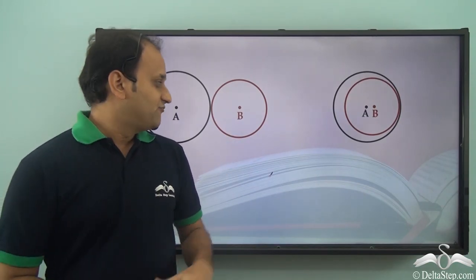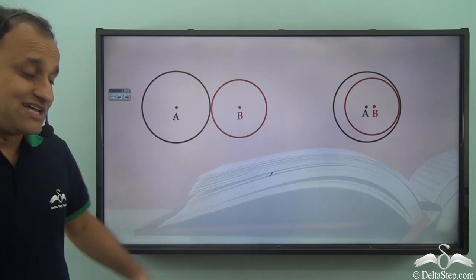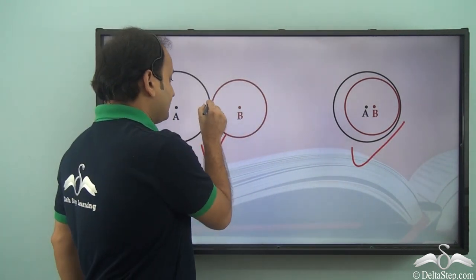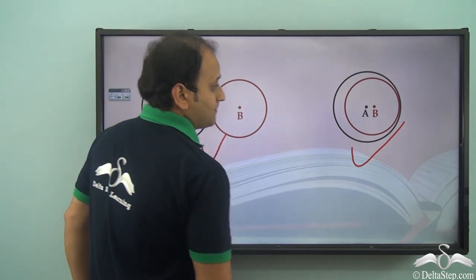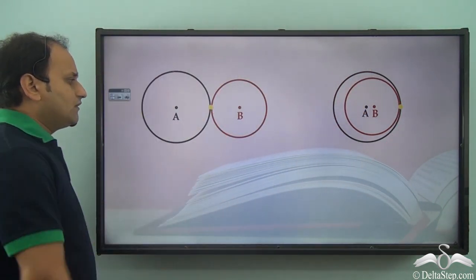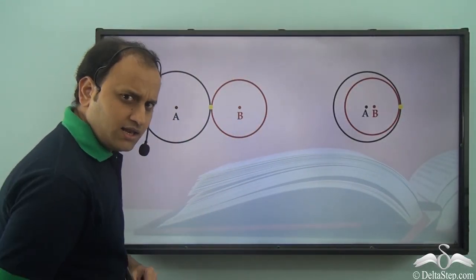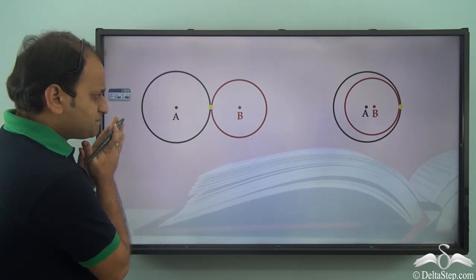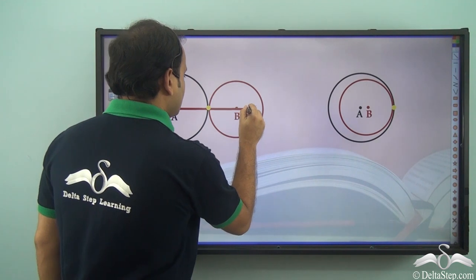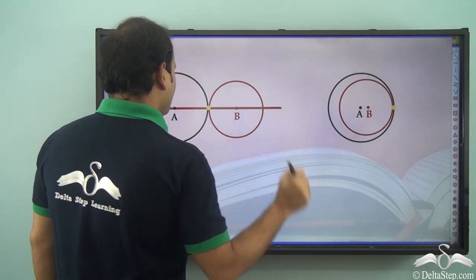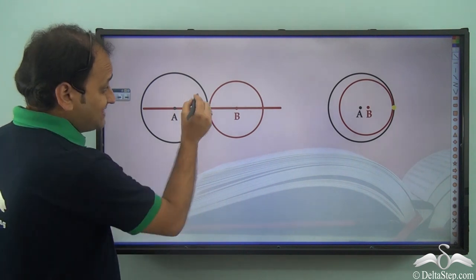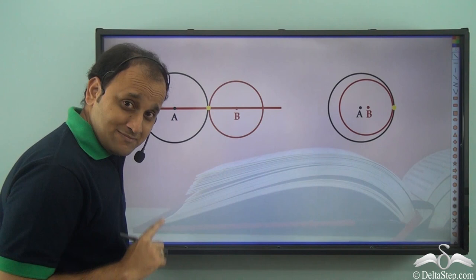We have circles which touch externally and touch internally, and we have a common point of contact. These common points of contact lie on a line. Drawing a line that passes through both centers, we can see that the line also passes through the common point of contact.